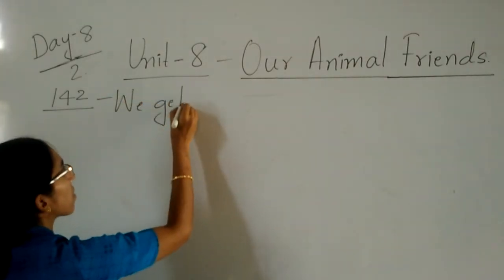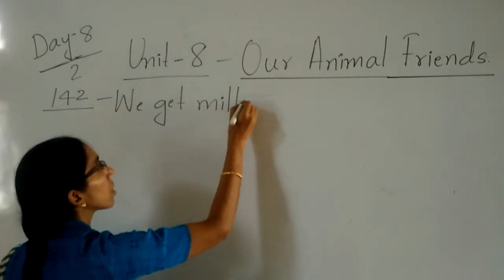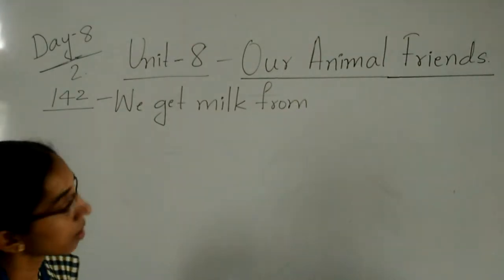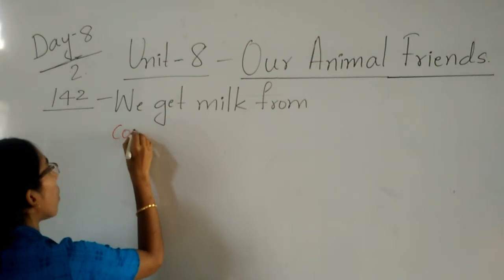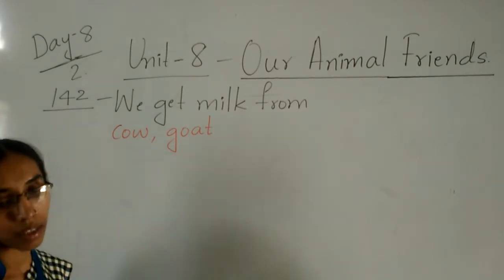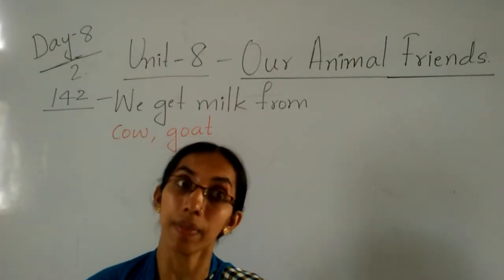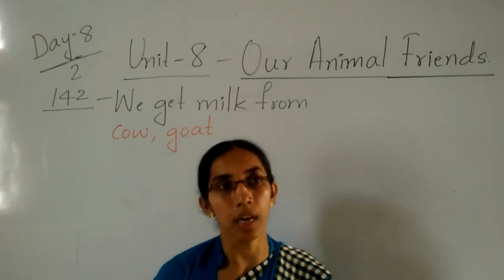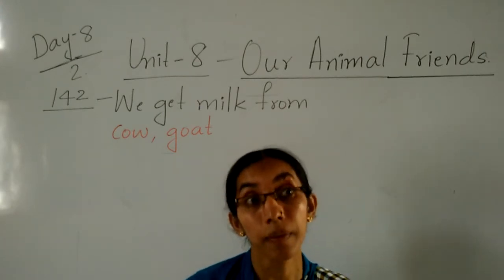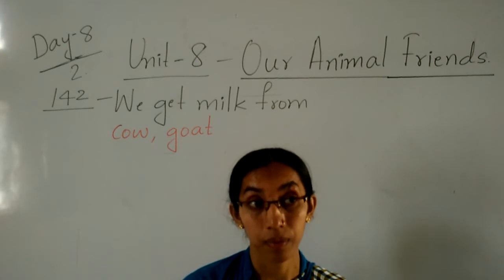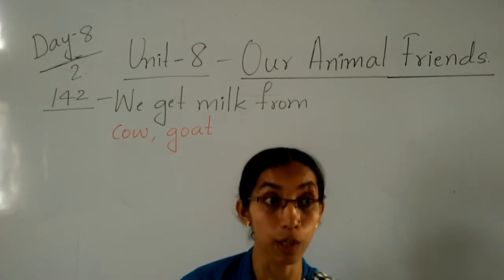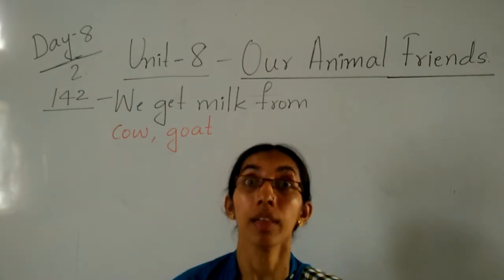We get milk from cow. They ask — cow and goat. With that milk, we can make a number of things — paneer, curd, cheese. All these things are made up of milk only. Chocolates also, you know? That is called dairy products.